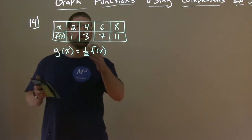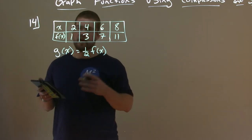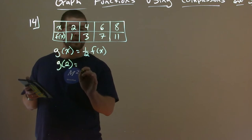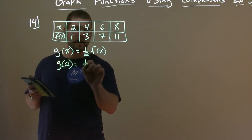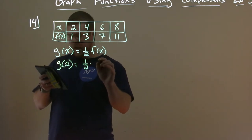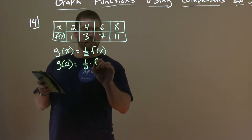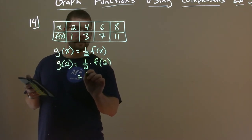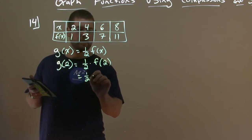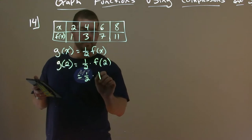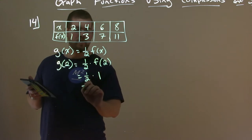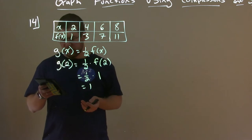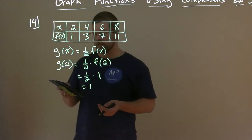G of x is equal to one half times f of x. So if you want to find g of 2, we say one half times f of 2. Well, f of 2 is 1, and one half times 1 is one half. So the value of g of 2 is one half — be careful there.